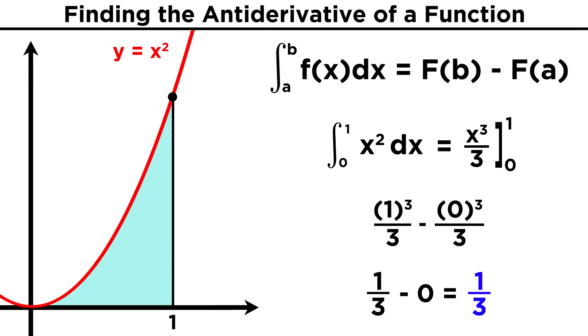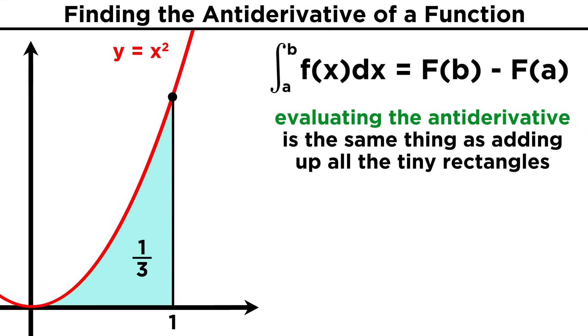As we recall from the previous tutorial, this was the area under the curve that we got from the tiny rectangles, as the number of rectangles increased to infinity. So we can see that this approach of evaluating antiderivatives is doing exactly the same thing. We are getting the area under the curve.